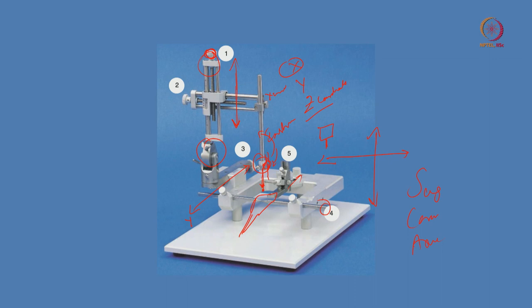The vertically oriented axis allows height adjustment, giving us the Z coordinate. You will need to adjust the X, Y, and Z coordinates. Twisting and turning the adjustment moves the adapter up and down for the Z coordinate. The adapter also moves in the X direction for the X coordinate, and in the Y direction for the Y coordinate. The scale on each arm lets you take coordinates and adjust to target a specific point within the rat brain. We will discuss exactly how to target a particular structure in the next few slides.